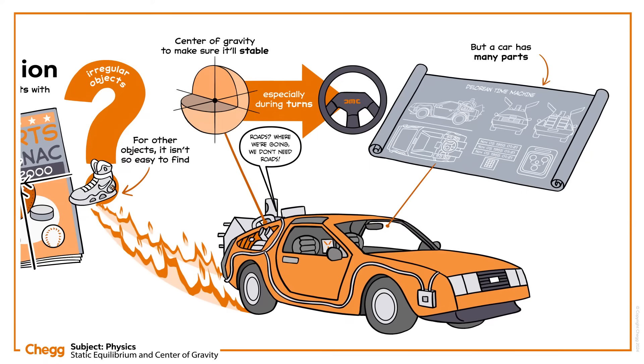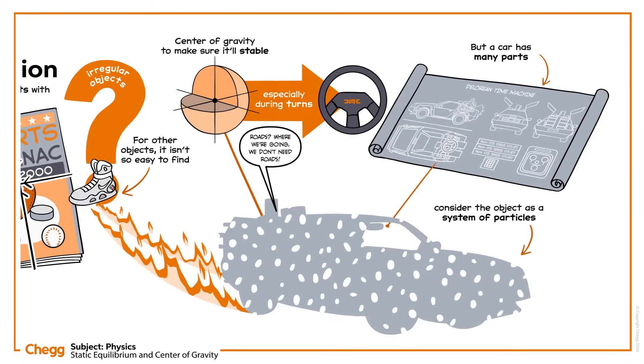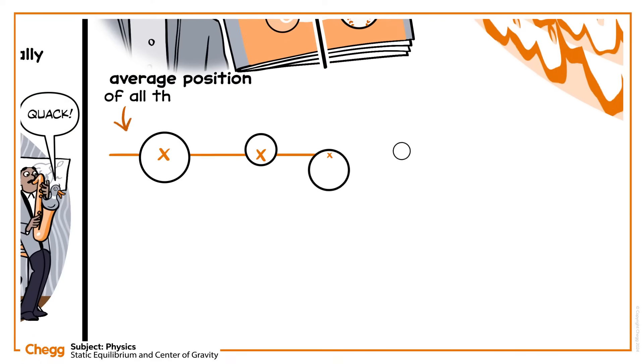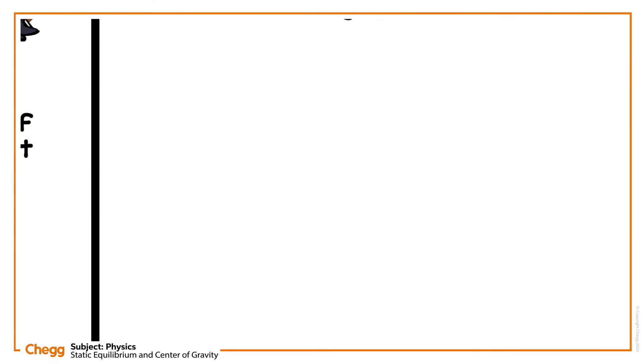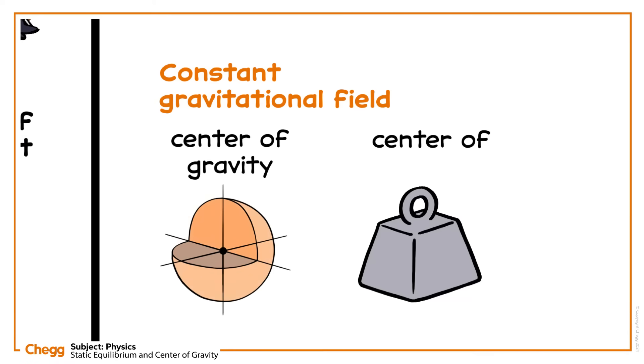To find the centre of gravity, consider the object as a system of particles. You need to find the average position of all the particles, weighted according to how heavy they are. In a constant gravitational field, centre of gravity and centre of mass are equal.